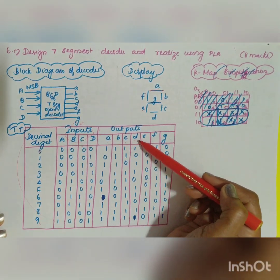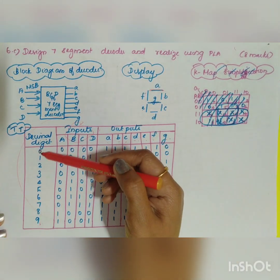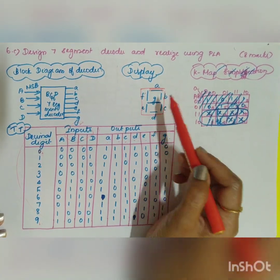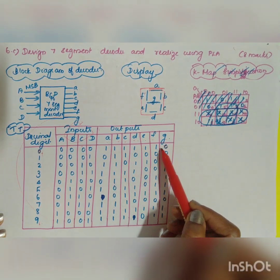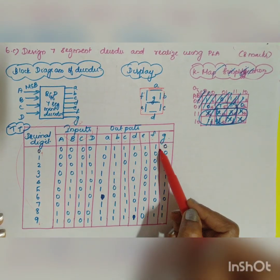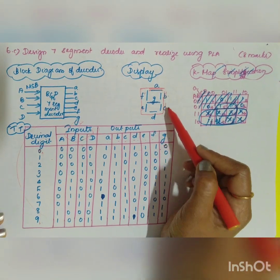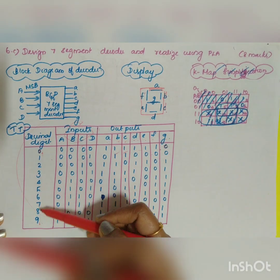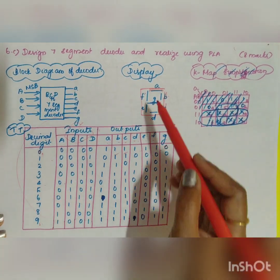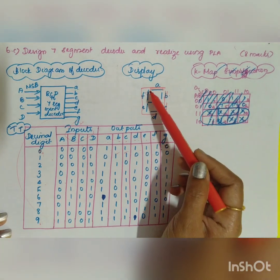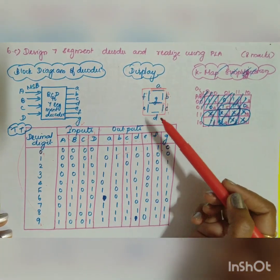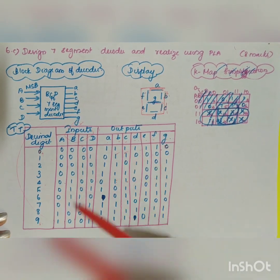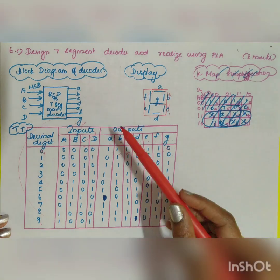For example, to display zero, segments a, b, c, d, e, f are all enabled (equal to one) except g, which is zero. For one, only b and c are one; all others are zero. For four, segments b, c, f, g are one and all others are zero. This gives you the complete truth table.